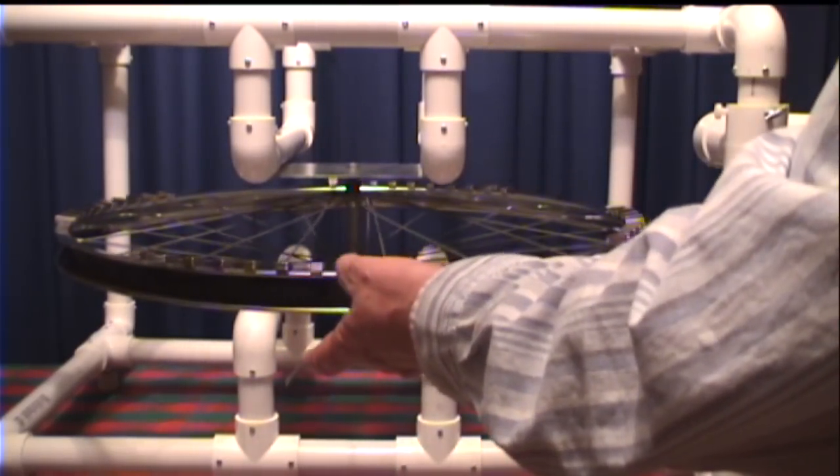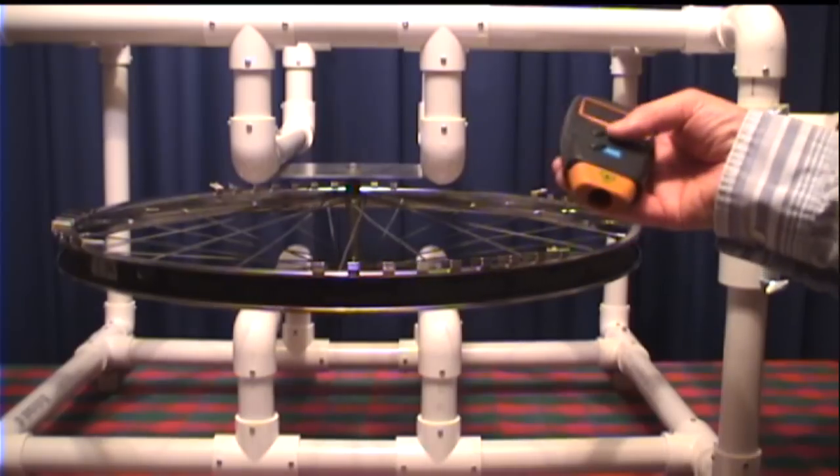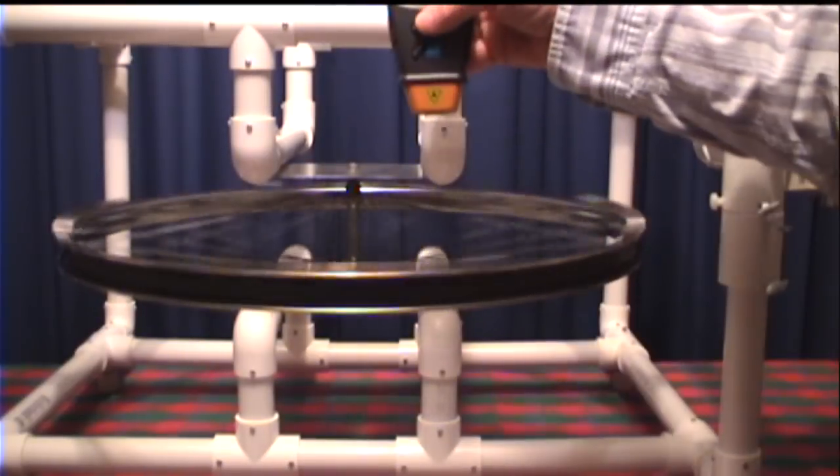And it says 1,286 RPM. Now, obviously, it's not spinning that fast. It's picking up reflections off the magnets. But let me move this back a little further, give it another spin.